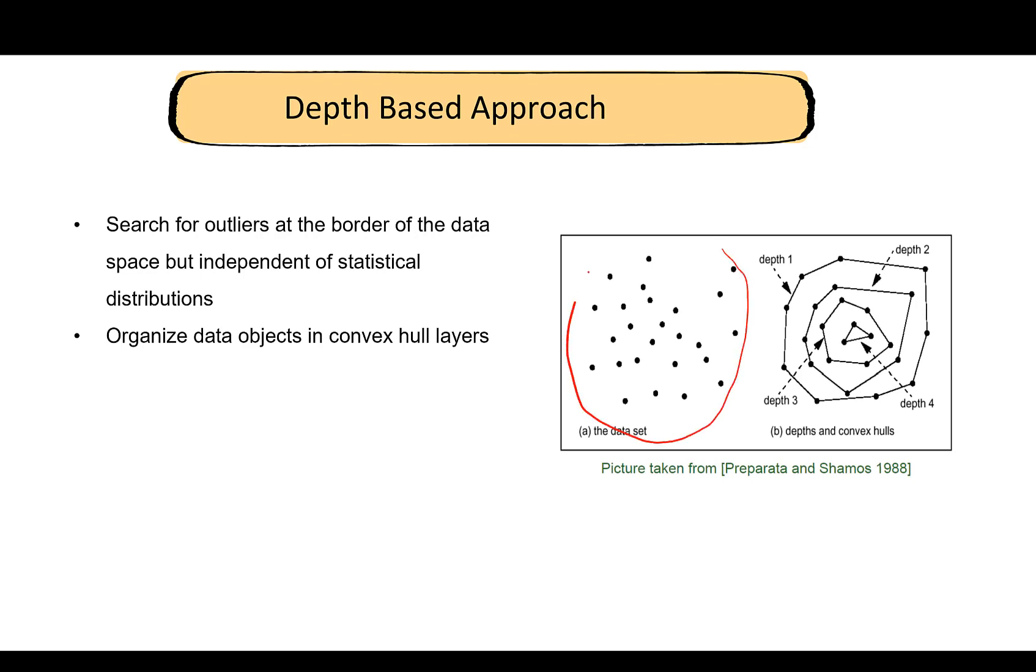It organizes objects into convex hull layers. Look at this plot. This is the data set. What this does is it forms, it's going to join all of the points that are in the outer layer. This is one layer. Then remove all of these points on this layer, then again join the outermost points, and so on. You can proceed till you've covered all of the points.